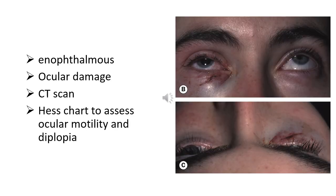Patients may also develop enophthalmos due to recession of the globe into the orbital cavity at the fracture site, or ocular damage from direct injury. CT scan with coronal sections is particularly useful in evaluating the extent of the fracture. The Hess chart is useful in assessing and monitoring the progression of diplopia.